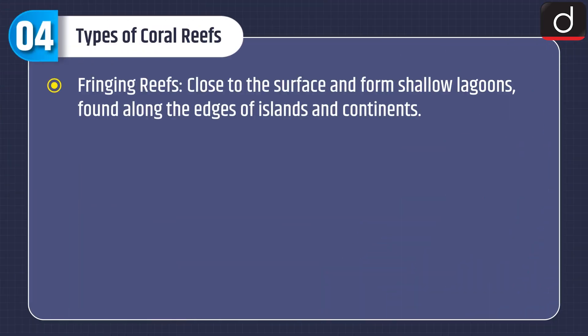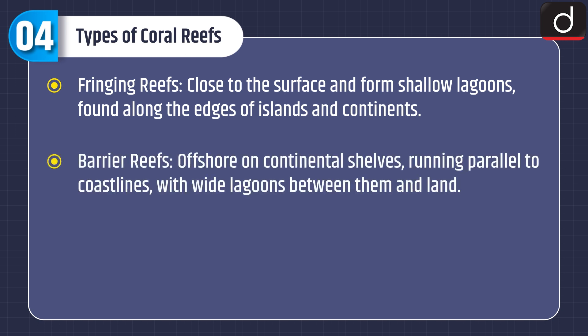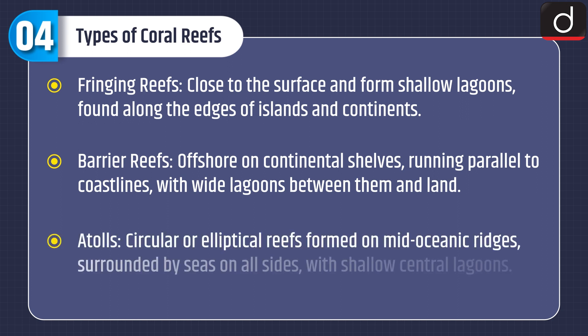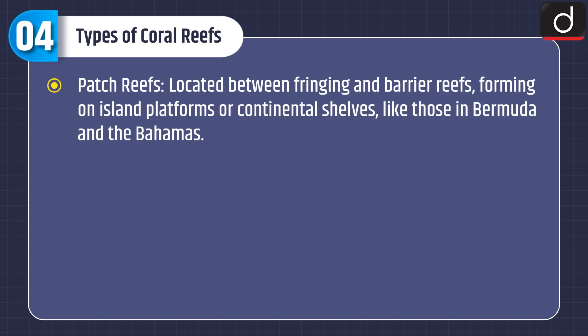There are four types of coral reefs. Fringing reefs are close to the surface, form shallow lagoons, and are found along edges of islands and continents. Barrier reefs are offshore on continental shelves, running parallel to coastlines with wide lagoons between them and land. Atolls are circular or elliptical reefs formed on mid-oceanic ridges, surrounded by sea with shallow central lagoons. Patch reefs are located between fringing and barrier reefs, found on island platforms like those in Bermuda and the Bahamas.